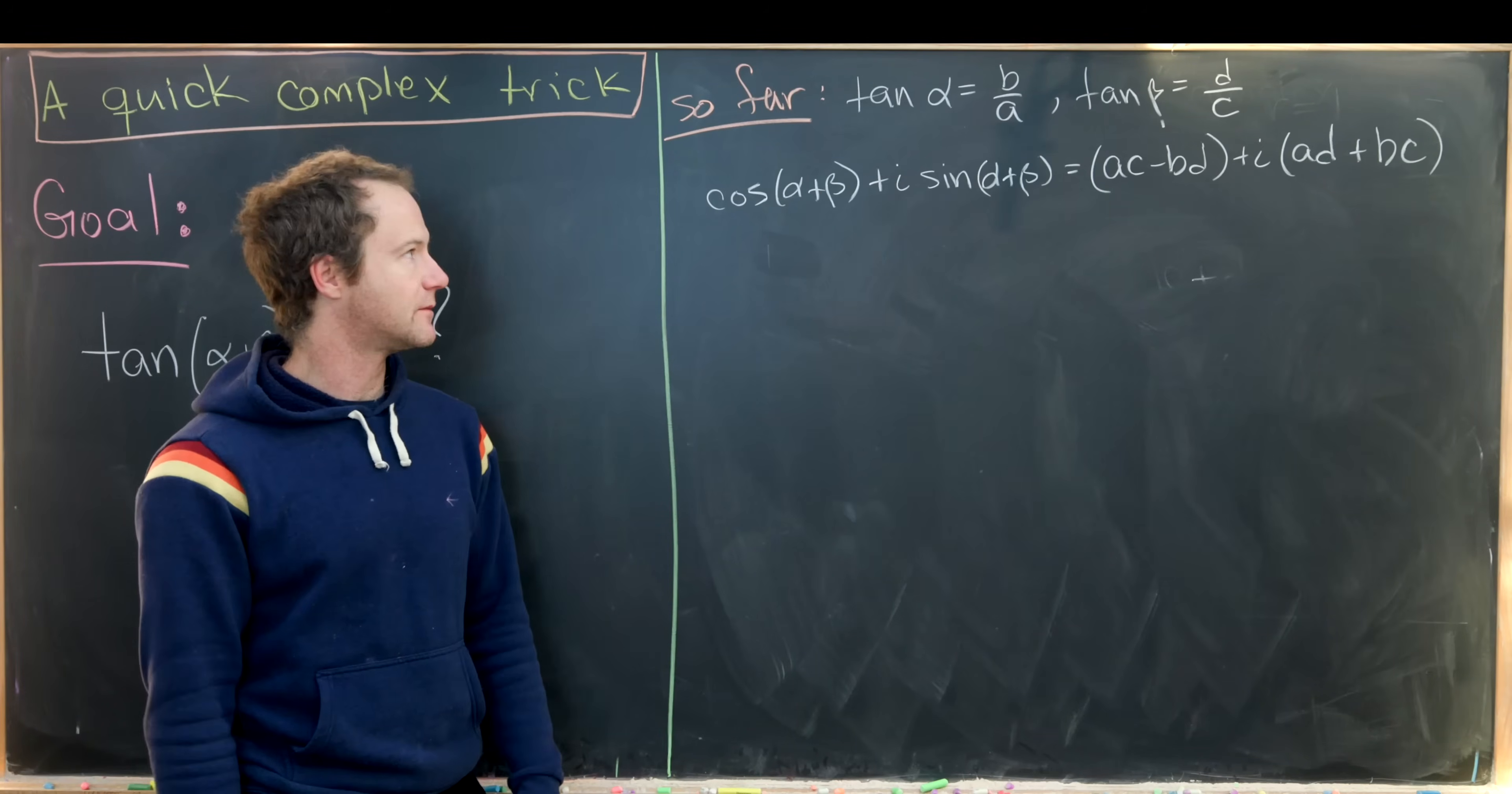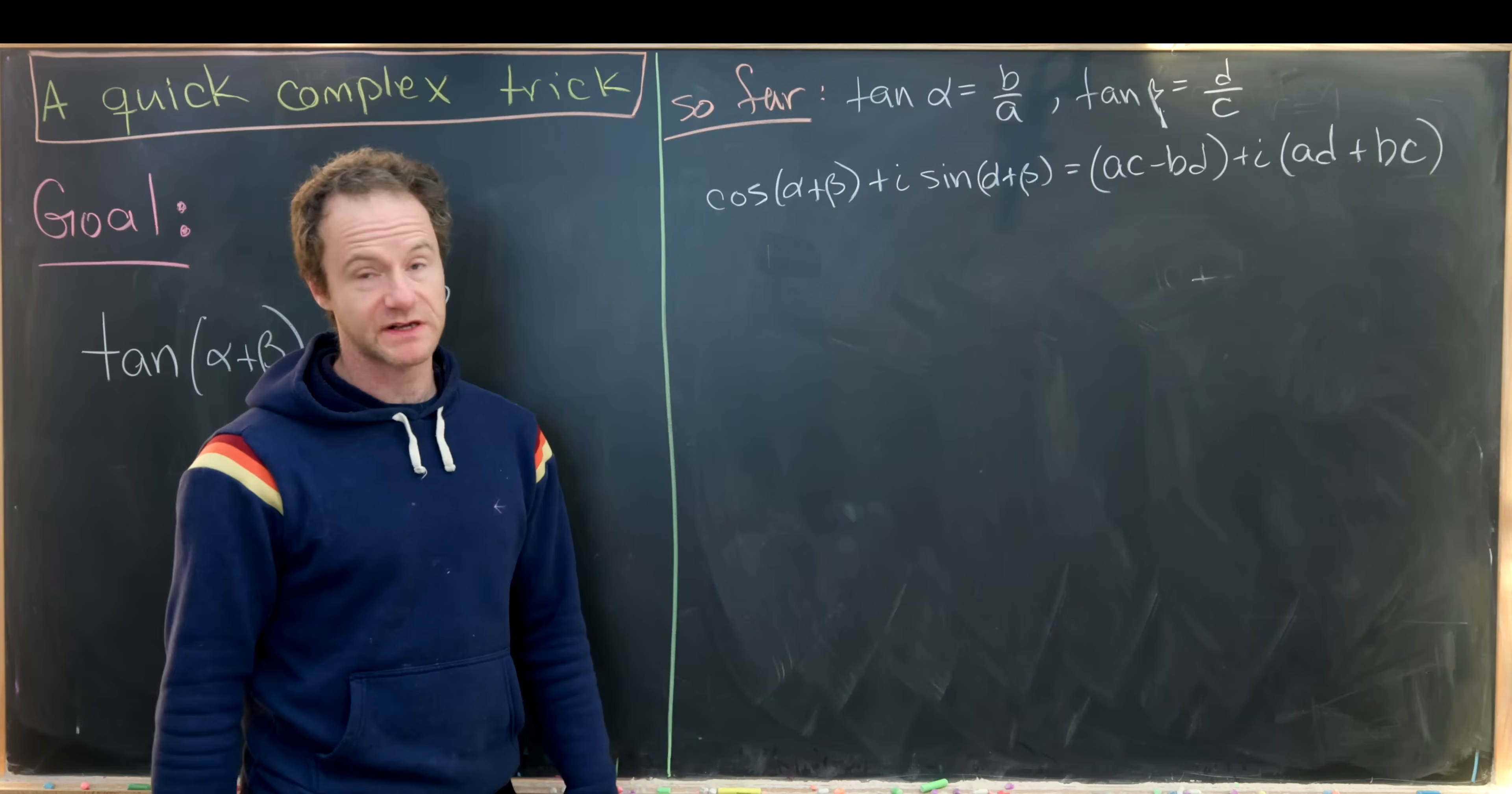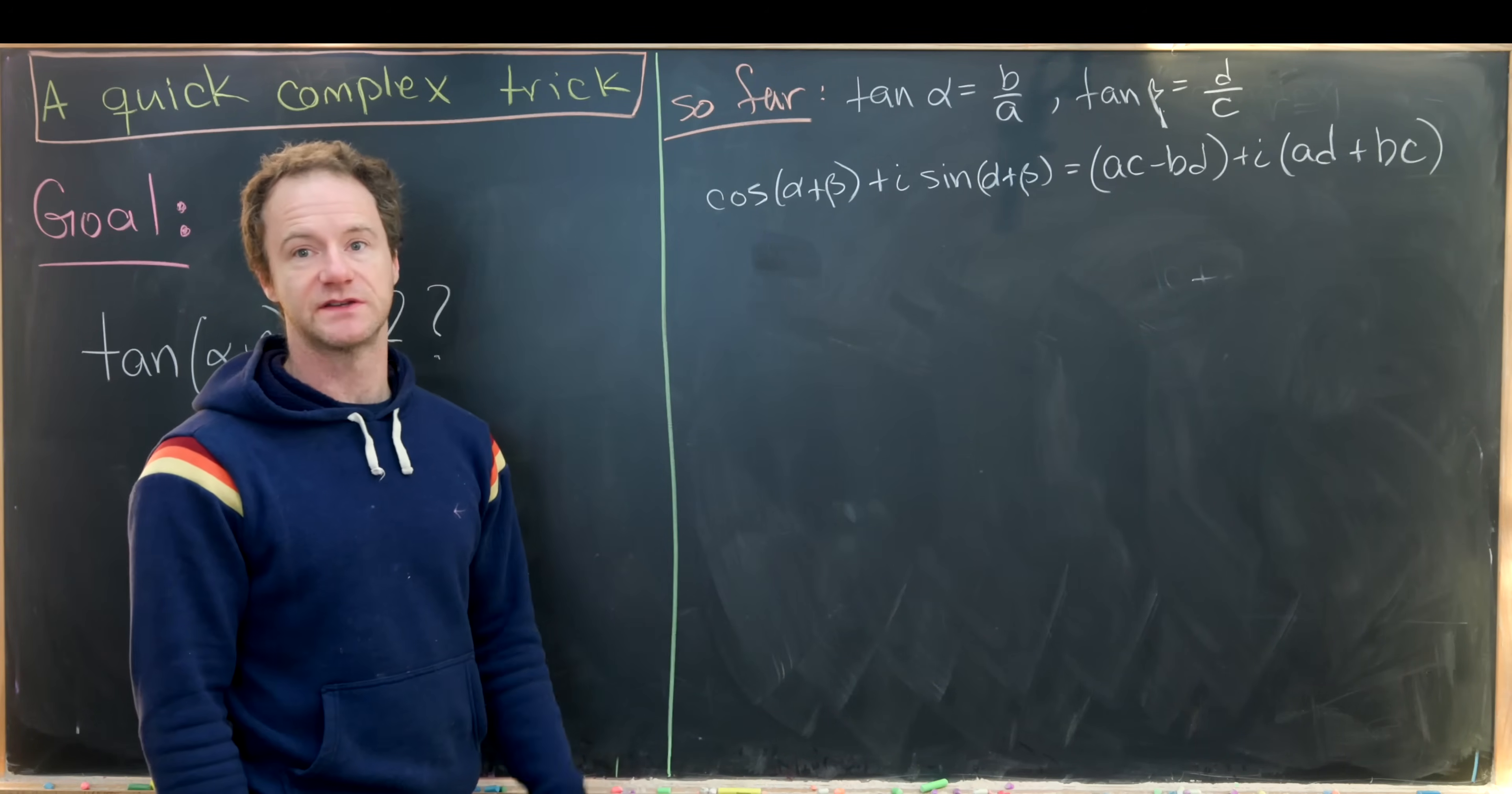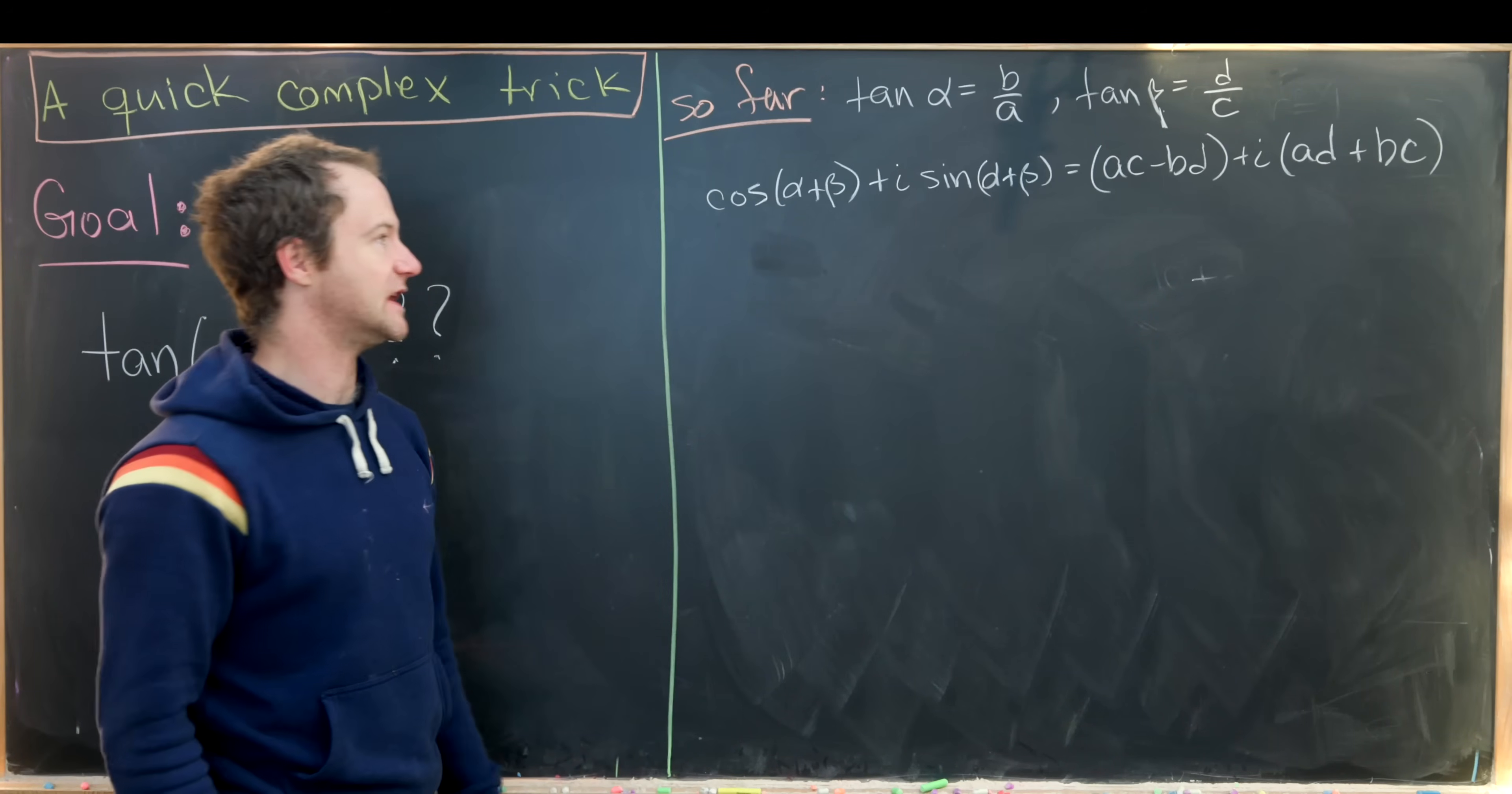So far, we've introduced two complex numbers z and w. The argument of z was alpha and the argument of w was beta. That gave us the value of the tangent of alpha and the tangent of beta. Then via some complex number arithmetic, we arrived at the following equation involving the cosine and the sine of alpha and beta and these rectangular components. Now we're ready to put it all together. Notice we can take the imaginary part of the left hand side, divide by the real part of the left hand side and do the same thing on the right hand side. And we'll have the same object because we have an equality here.